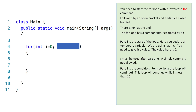Now comes the second part, which is very important because it determines how many times the loop will be repeated. It is the condition that controls whether the loop continues. If that condition is true, the loop will continue. As soon as that condition is false, the loop will end. For example, our condition here is 'i less than 10'. So while i is less than 10 the loop will continue. As soon as i becomes 10, the loop will end. After that condition comes another semicolon.